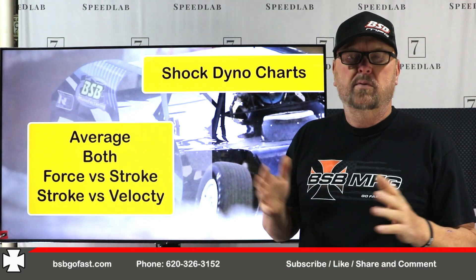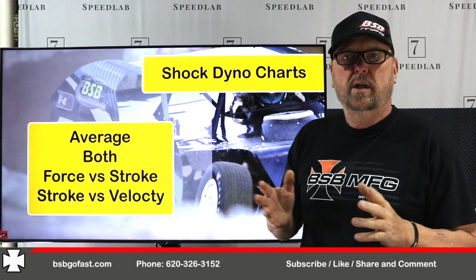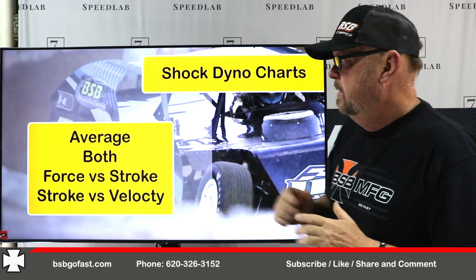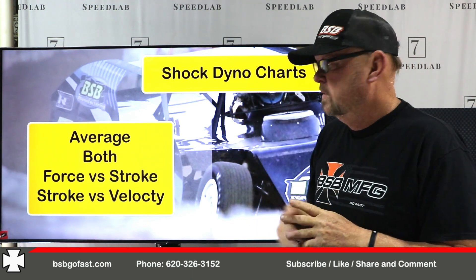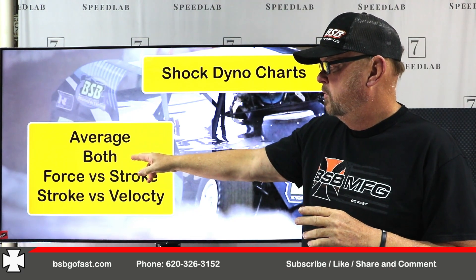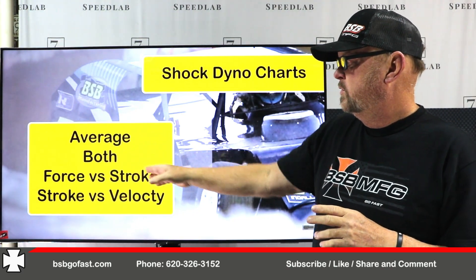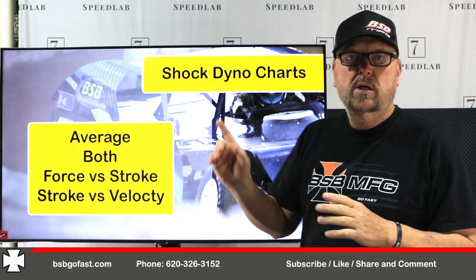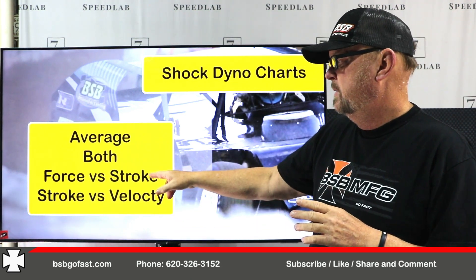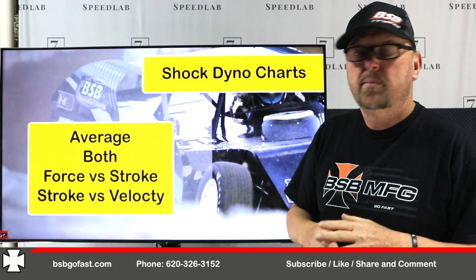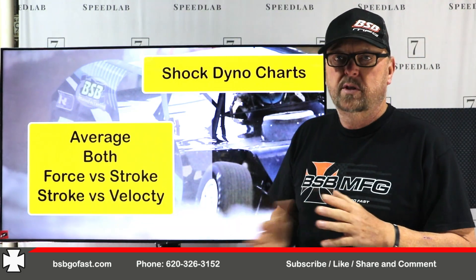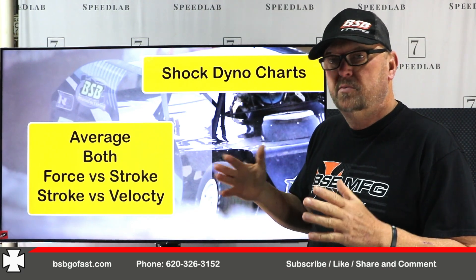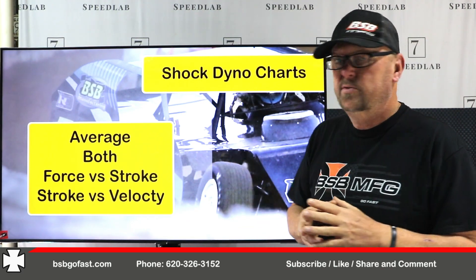For our newer audience that we've acquired here lately, we want to help them out too. So, shock dyno charts — basically there are four charts. You have your average chart, your both chart, your force versus stroke, and your stroke versus velocity. These are the four charts that dynos put out — they create these charts.